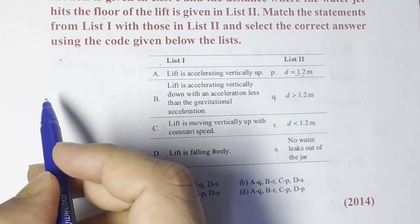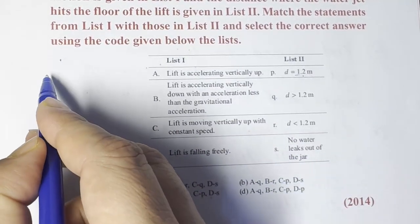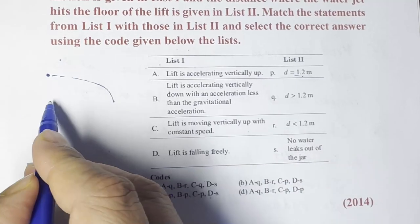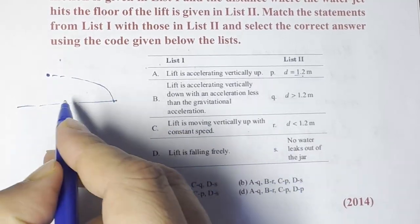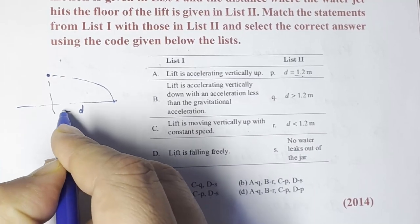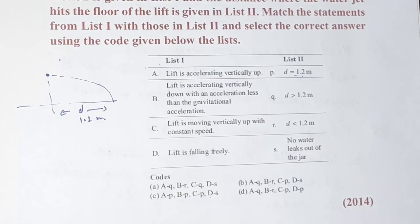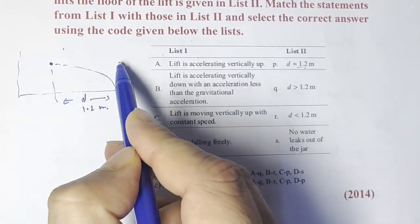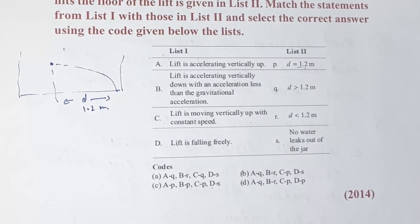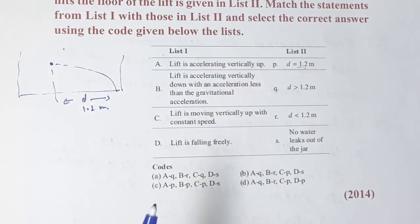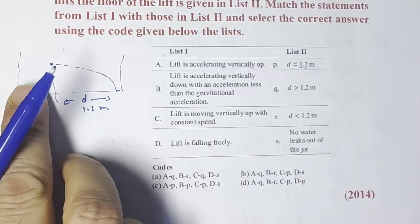It is given that the water jet strikes the floor at a distance d equal to 1.2 meters. The water jar is placed inside the lift and various situations are discussed. First, let's find out what the horizontal distance traveled by the water jet will be.